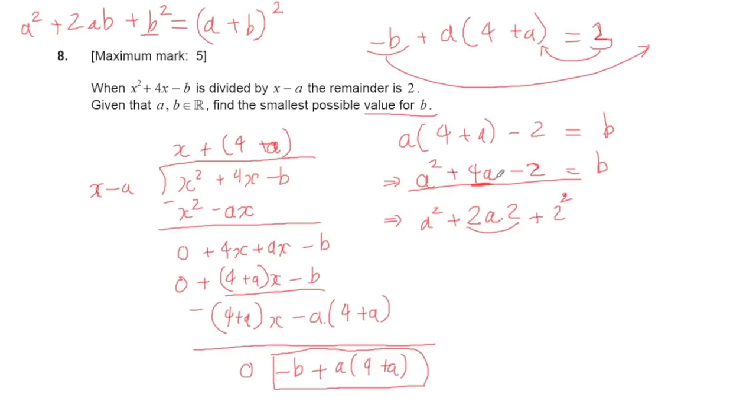Combining the first three terms gives (a + 2)² - 4 - 2. This simplifies to b = (a + 2)² - 6.